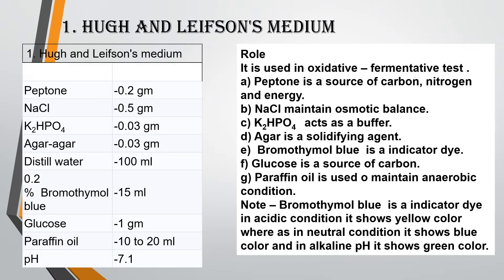Now let's see the role of components. Peptone acts as a source of carbon, nitrogen, and energy. NaCl maintains the osmotic balance. K2HPO4 acts as a buffer — it resists the change in pH. Agar Agar is a solidifying agent and Bromothymol Blue is an indicator dye used to detect the change in pH. Glucose is used as a source of carbon, and Paraffin Oil is used to maintain anaerobic conditions.